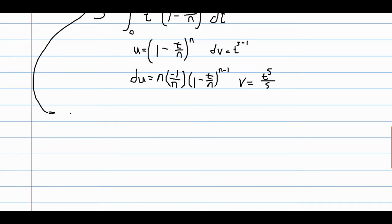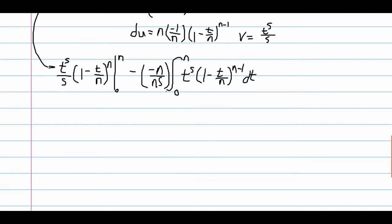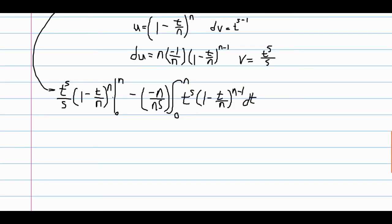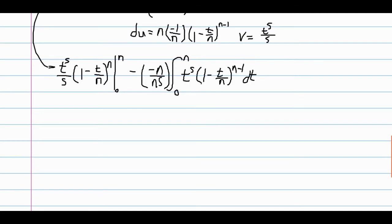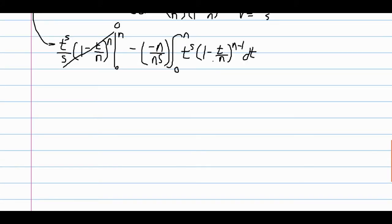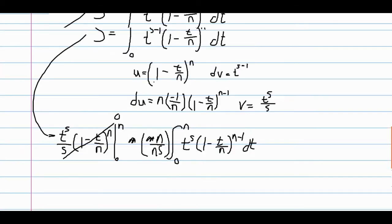Using integration by parts, we get that this integral is equal to u times v evaluated — you can pause and look at it — minus negative n over ns, and then this stuff. Let's look at this evaluation. At t equals 0, we're multiplying by t outside, so that becomes 0. And at t equals n, this inside part becomes 1 minus n over n, which is 1 minus 1, which is 0. So this total thing evaluates to 0, and the negatives cancel out.